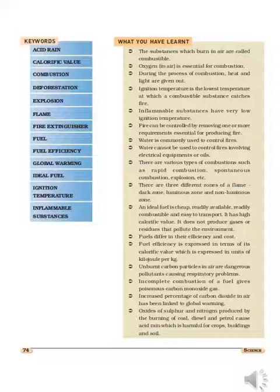Next point: oxygen present in the air is essential for combustion. For any material to burn, oxygen is essential, and it is readily available from the air. During the process of combustion, a combustible substance undergoes a chemical reaction that produces a large quantity of heat and light.